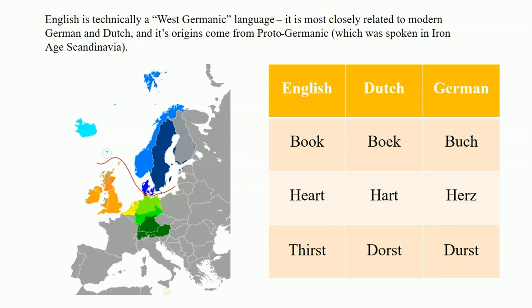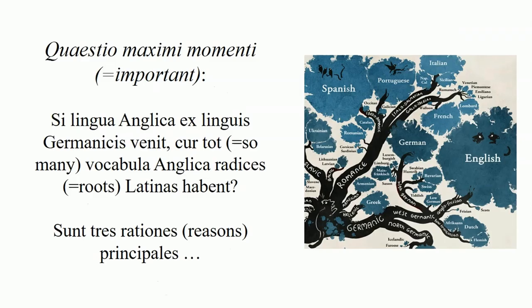Looking at the relationship between English and Dutch and German, we can see a lot of these words and their relationship quite easily. In English: book; in Dutch: boek; in German: buch. In English: heart; in Dutch: hart; in German: herz. In English: thirst; in Dutch: dorst; in German: durst. If we just change the 'th' — thinking of it as a different way of saying 'd' — then it would actually look very similar.